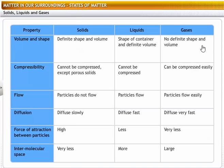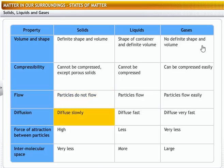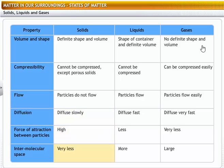Before we move on, let's look at the properties of solids, liquids and gases. Solids have definite shape and volume. Cannot be compressed, except porous solids. Particles do not flow. Diffuse slowly. High force of attraction between particles. Very less intermolecular space.